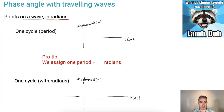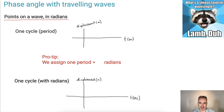In this video, we're going to be talking about phase angle and traveling waves. What's a sheep's favorite wavelength? Lambda! That's because we're going to be talking about wavelength in a second.